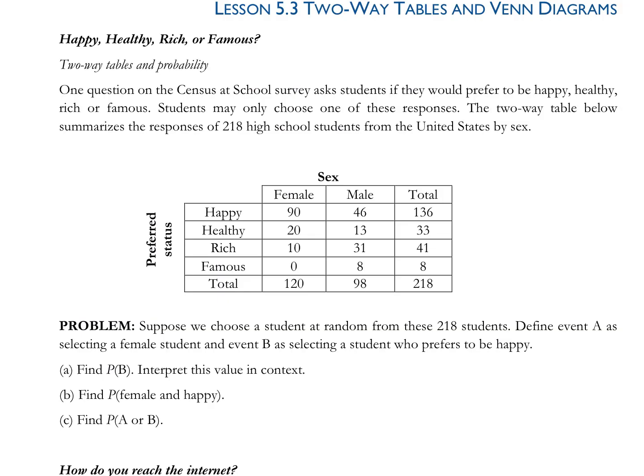So happy, healthy, rich, or famous, the beginning of the year we looked at this information. One question on the census at school survey asked students if they would prefer to be happy, healthy, rich, or famous. Students may only choose one of these responses. The two-way table below summarizes the responses of 218 students from the United States by sex. Suppose we choose a student at random from these 218, define A as an event of selecting a female and B as selecting a student who prefers to be happy.